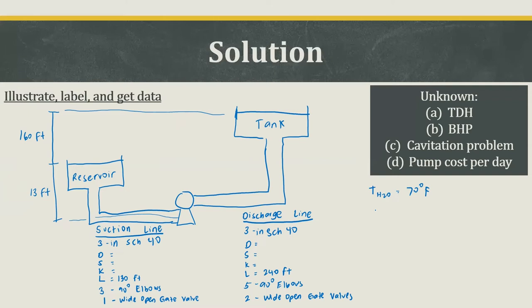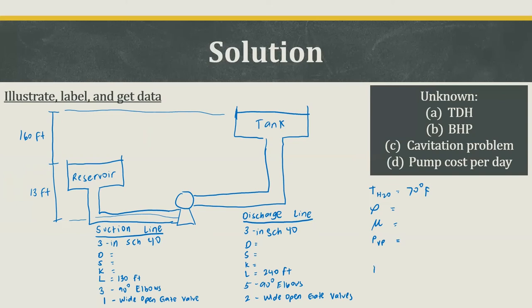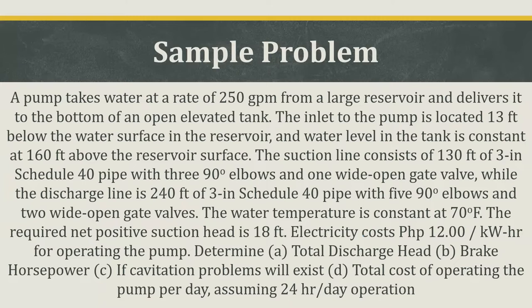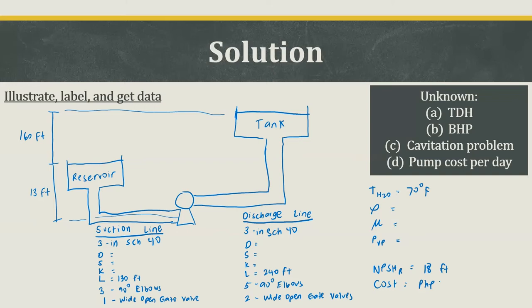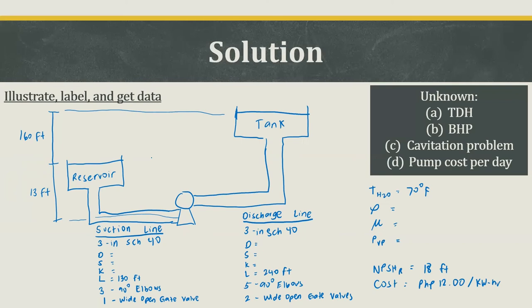Along with the temperature, we note the density, viscosity, and vapor pressure — written as PVP — which we'll get later. The required net positive suction head is 18 feet, so NPSHR equals 18 feet. The electricity cost is 12 pesos per kilowatt hour. The pump takes water at a rate of 250 gallons per minute, and we assume the pump is 70% efficient.